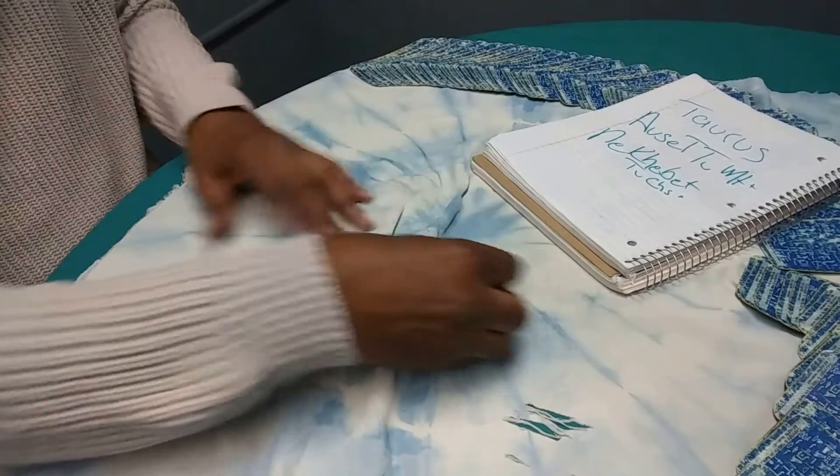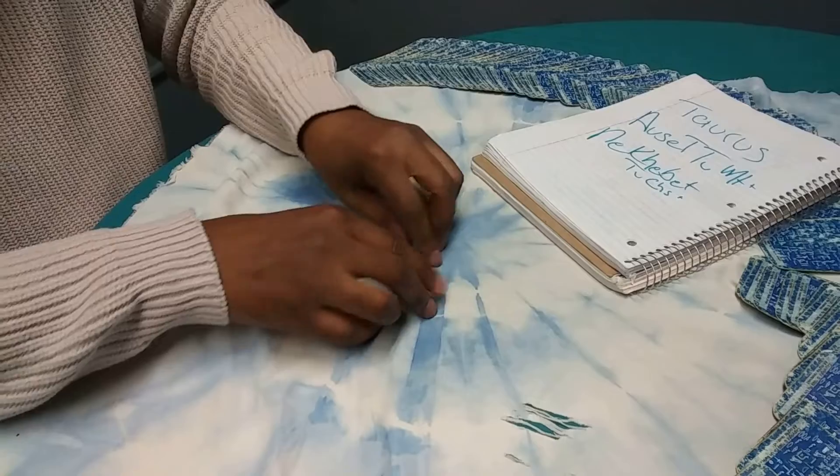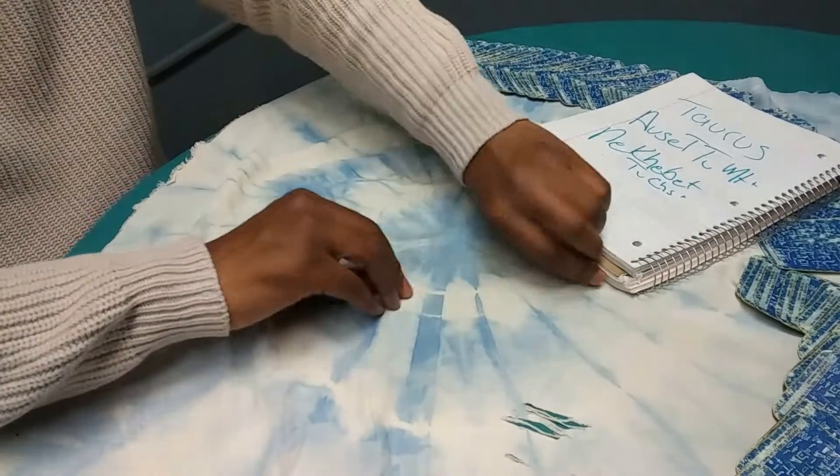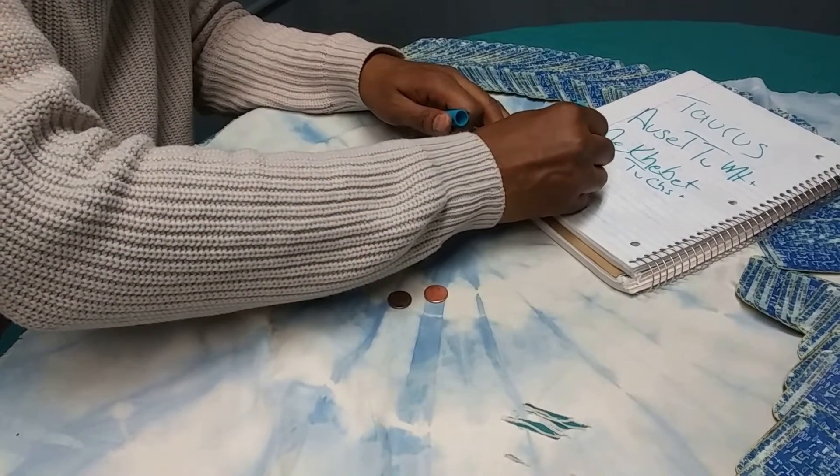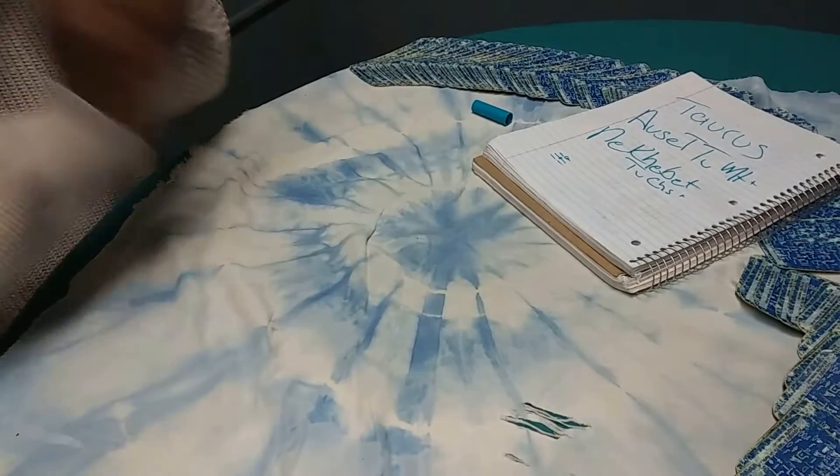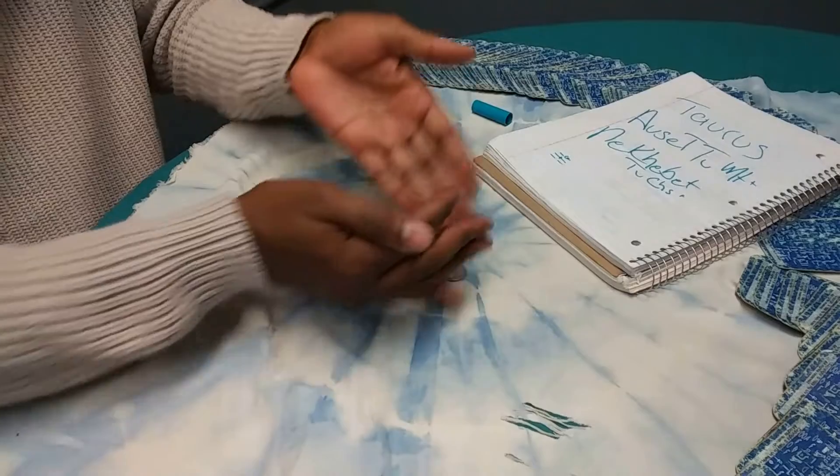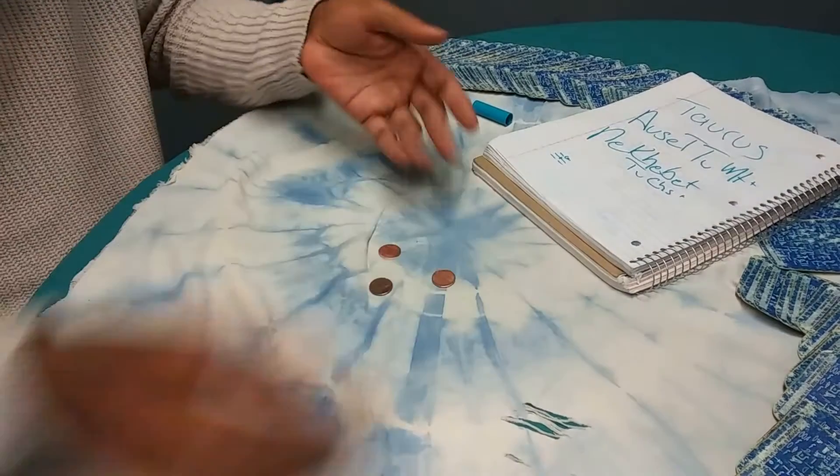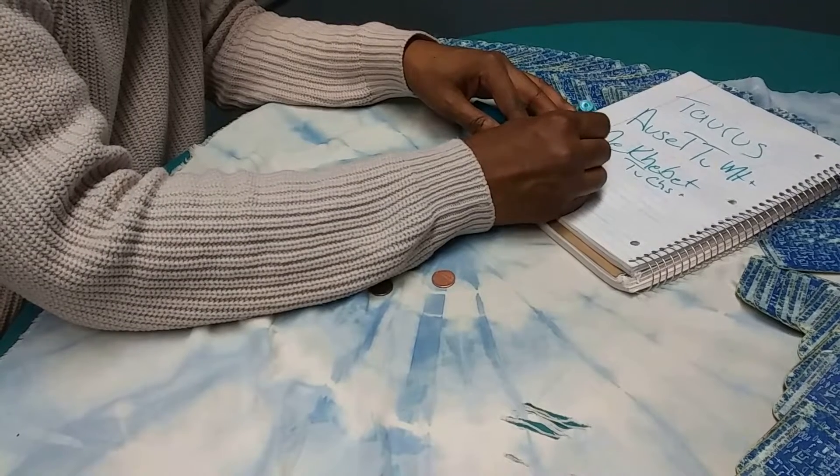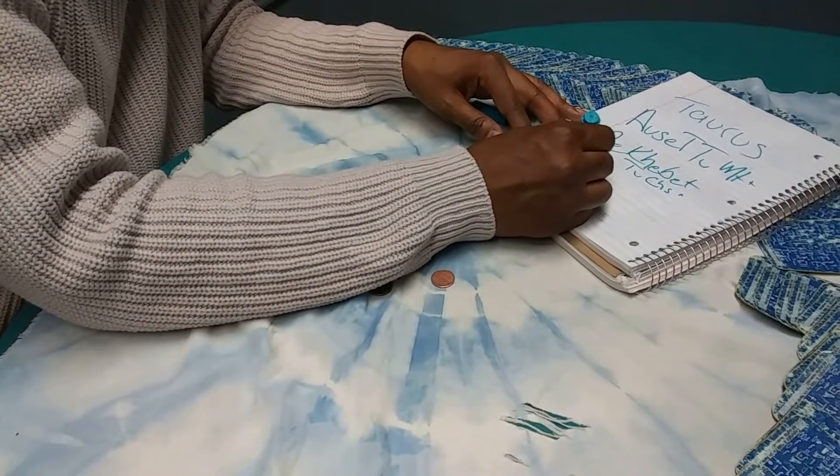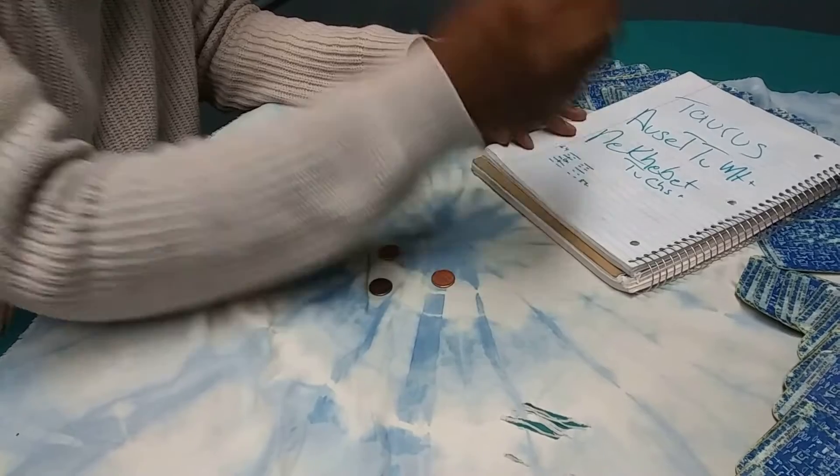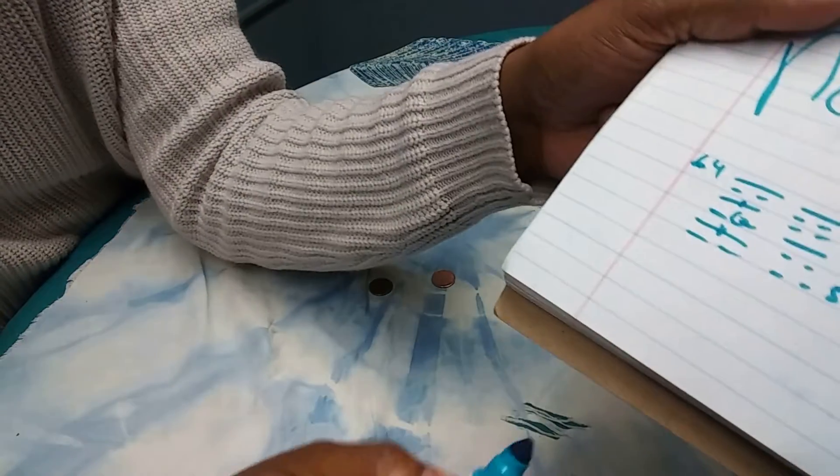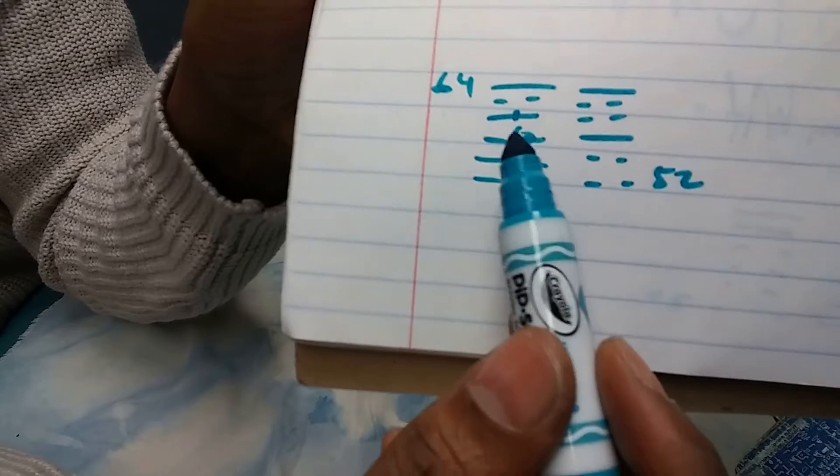Let us do an I Ching reading, see if we can hone it in some more. Open, close stress, open, close stress. We got 64 into the 52. Can you see that? All right, 64 with lines two, three and four stressed into the 52. 64 before completion.